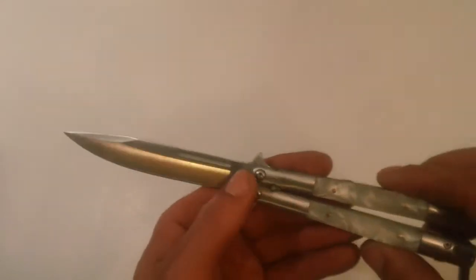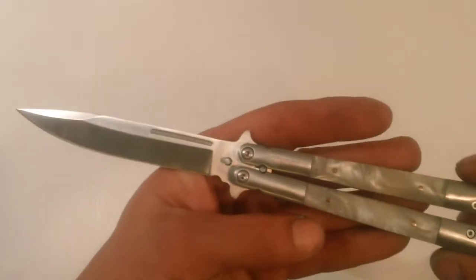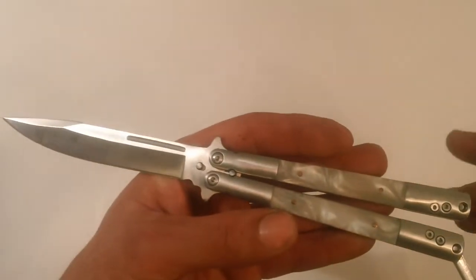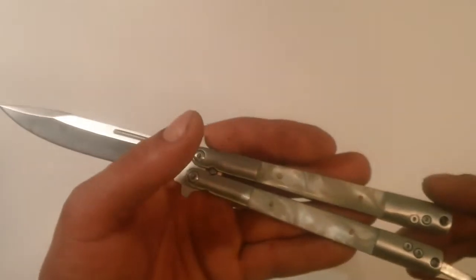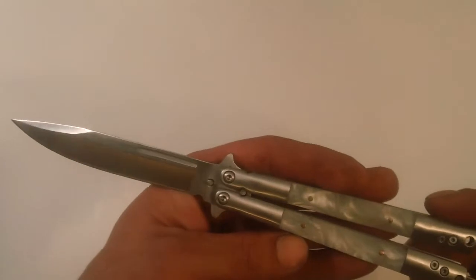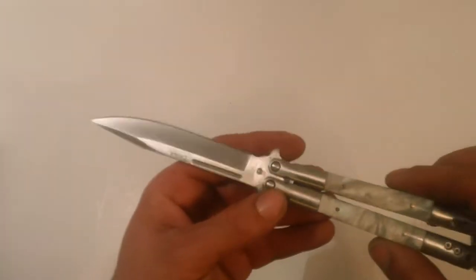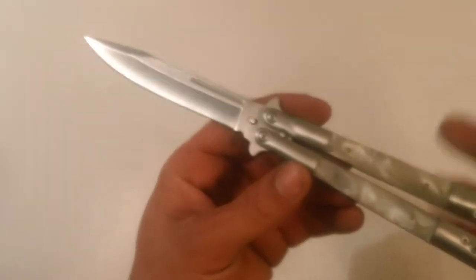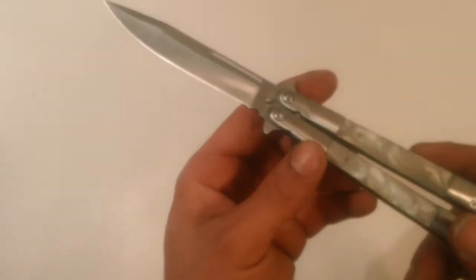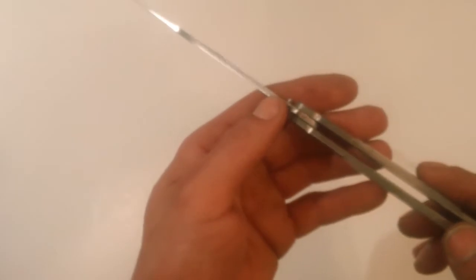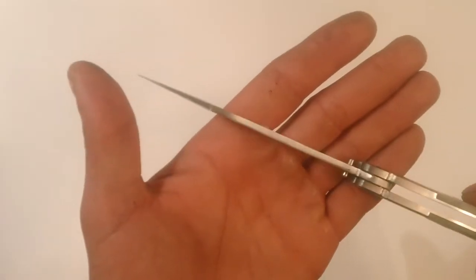As far as the construction, all Torx construction on this guy. So that's always an added plus. You can go ahead and adjust them as needed as you get your break-in going on there. The blade on this, you're using 440C. Hardened at 57, which is the usual. Thickness of the blade is 0.125. So it's your average there.